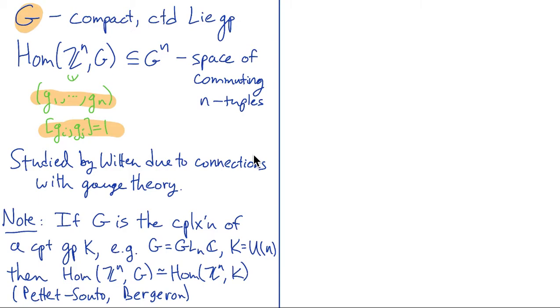So these spaces were studied by Witten because of their connections with gauge theory. Basically if you look at flat connections on a torus the holonomy of such a connection will give you an n-tuple of commuting elements like this. I want to point out that the restriction that G is a compact Lie group is not really important here. If you take instead the complexification of some compact group like the general linear group, which is the complexification of the unitary group, then the space of commuting n-tuples in G and the space of commuting n-tuples in K are actually homotopy equivalent. That's a result of Pettet and Souto. Bergeron also gave a new proof of that more recently.